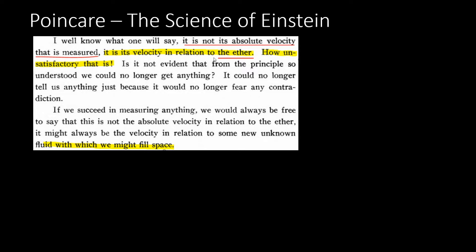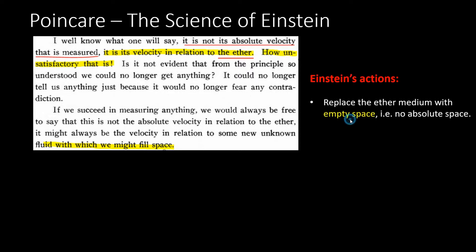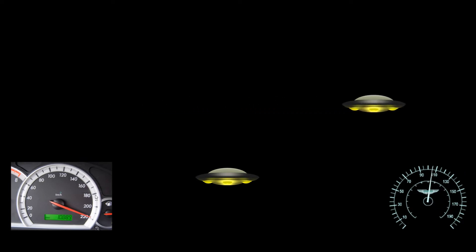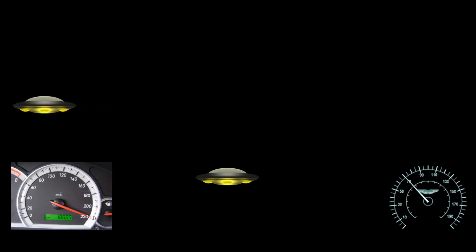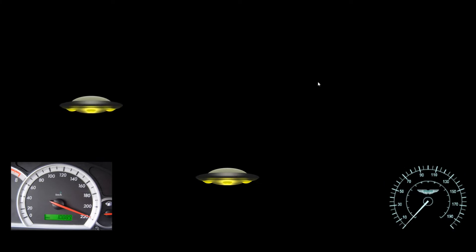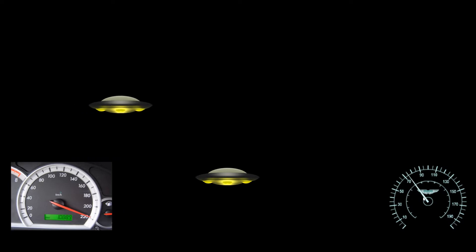What did Einstein do about this? He just got rid of the ether and replaced it with something called empty space. This sounds logical, but now instead of having your velocity relative to the ground or the ether that fills space, your velocity is only calculated relative to other objects inside of empty space. And now we are in Einstein's world, where relativity is at full throttle.